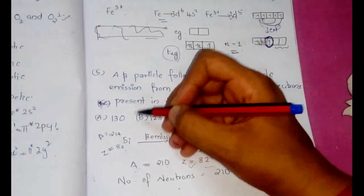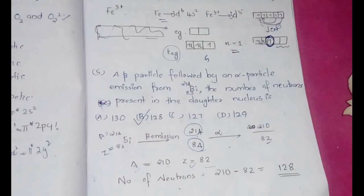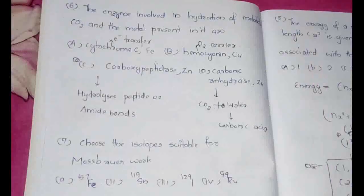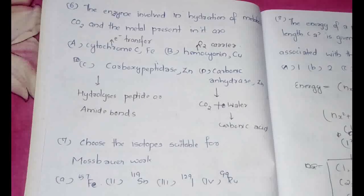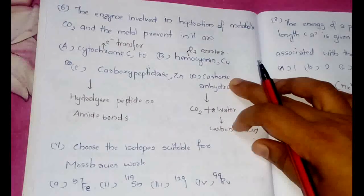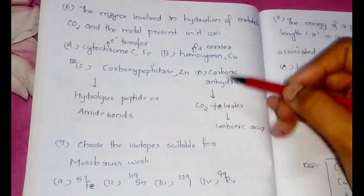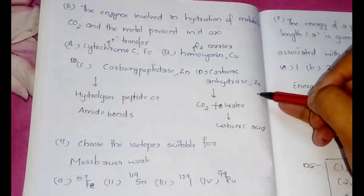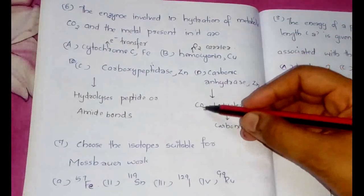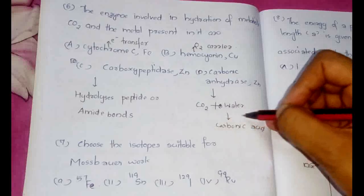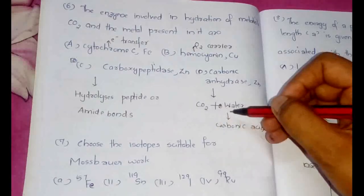The next question is from bioinorganic chemistry. The question is: the enzyme involved in hydration of metabolic carbon dioxide and the metal present in it are. So the answer is carbonic anhydrase with zinc. So what happens is carbonic anhydrase will hydrolyze, I mean CO2 and water will be reacted and carbonic acid will be formed.